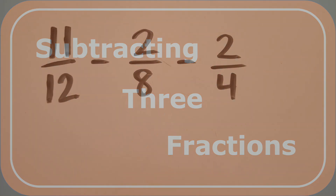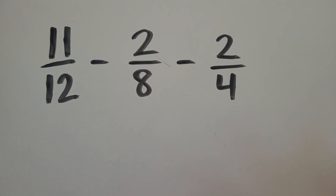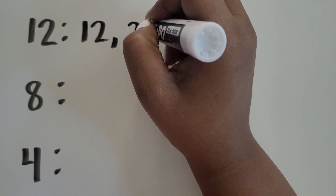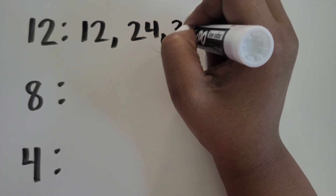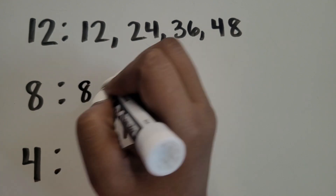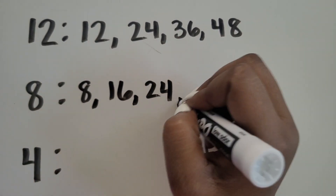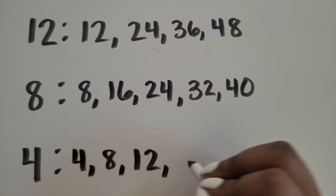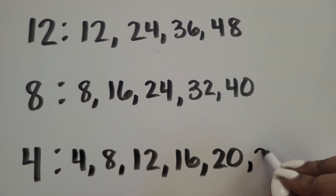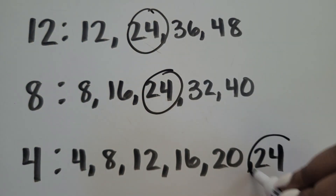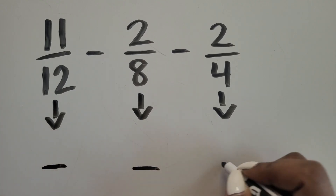How could your students go about solving a subtraction expression with 3 fractions? Again, let's list out the multiples of the denominators in order to find a common denominator. For 12, we can list out 12, 24, 36, 48. For 8: 8, 16, 24, 32, 40. For 4: 4, 8, 12, 16, 20, 24. We can see that they all have 24 as a multiple, so we'll use 24 as the common denominator.